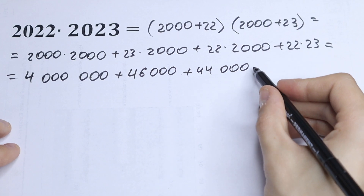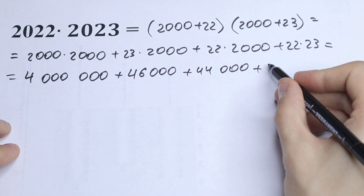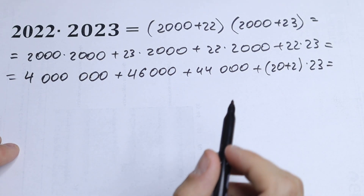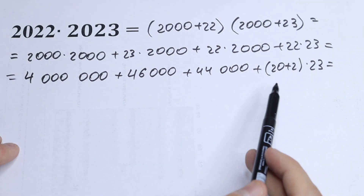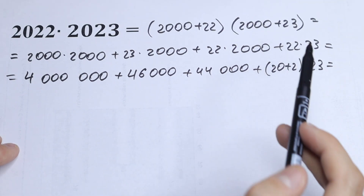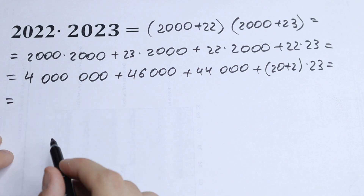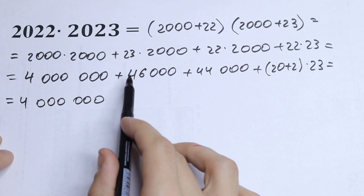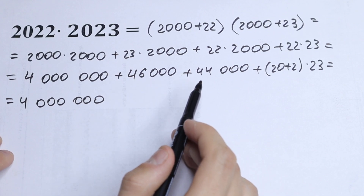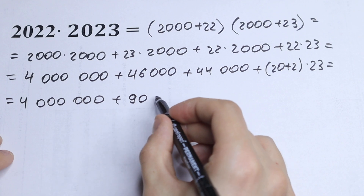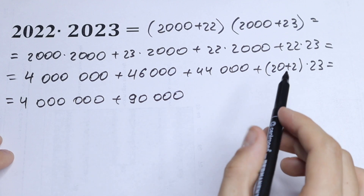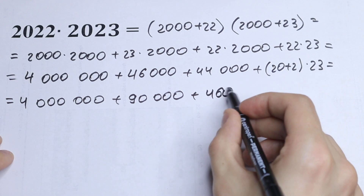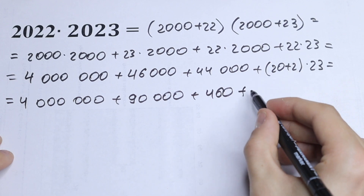And for the last term, I write 22 as 20 plus 2, times 23. Nothing hard, just multiplying our expressions. And right here is a little trick — just write this to multiply. So we get 20 times 23, which is equal to 460, and the last part is plus 46.